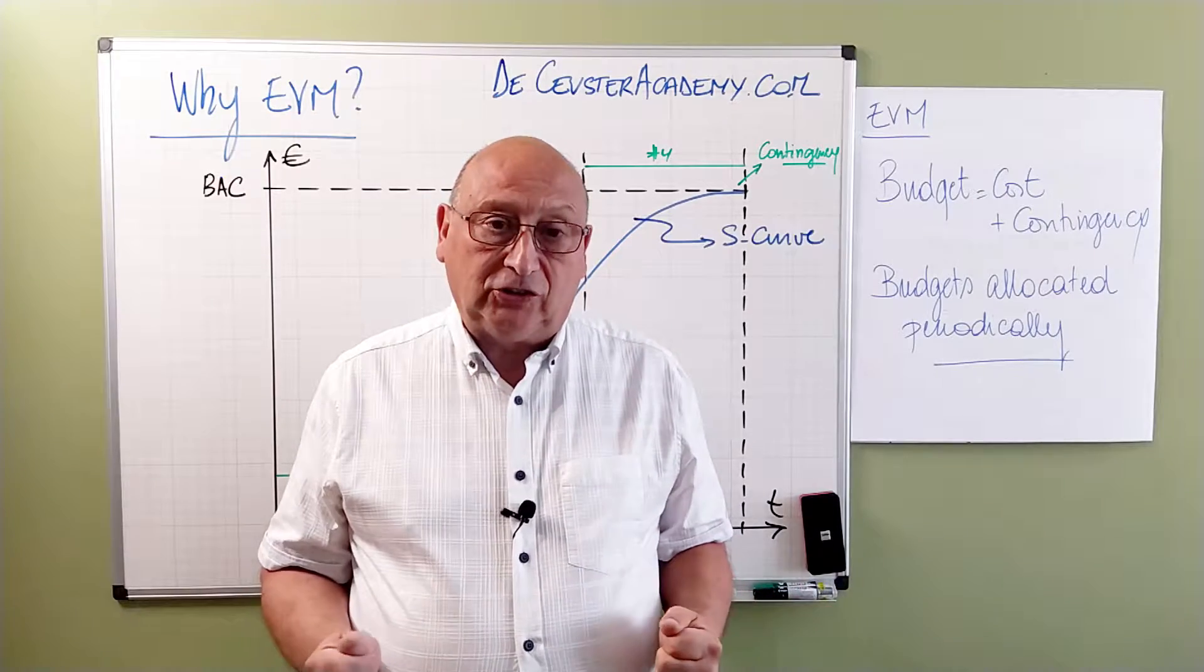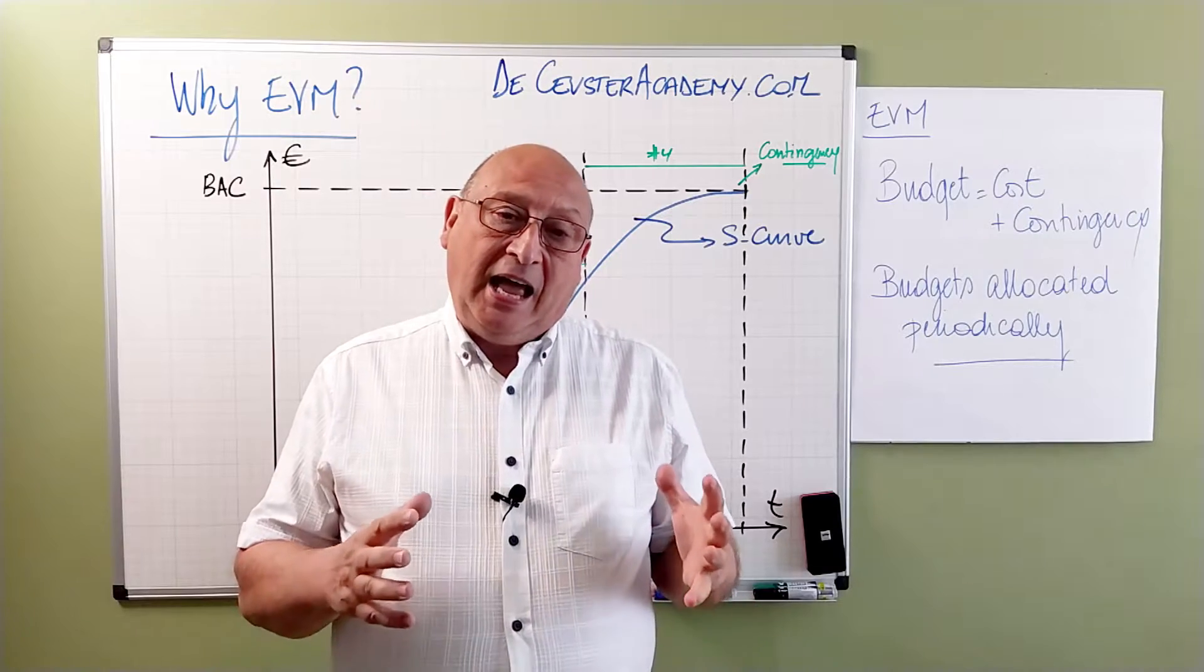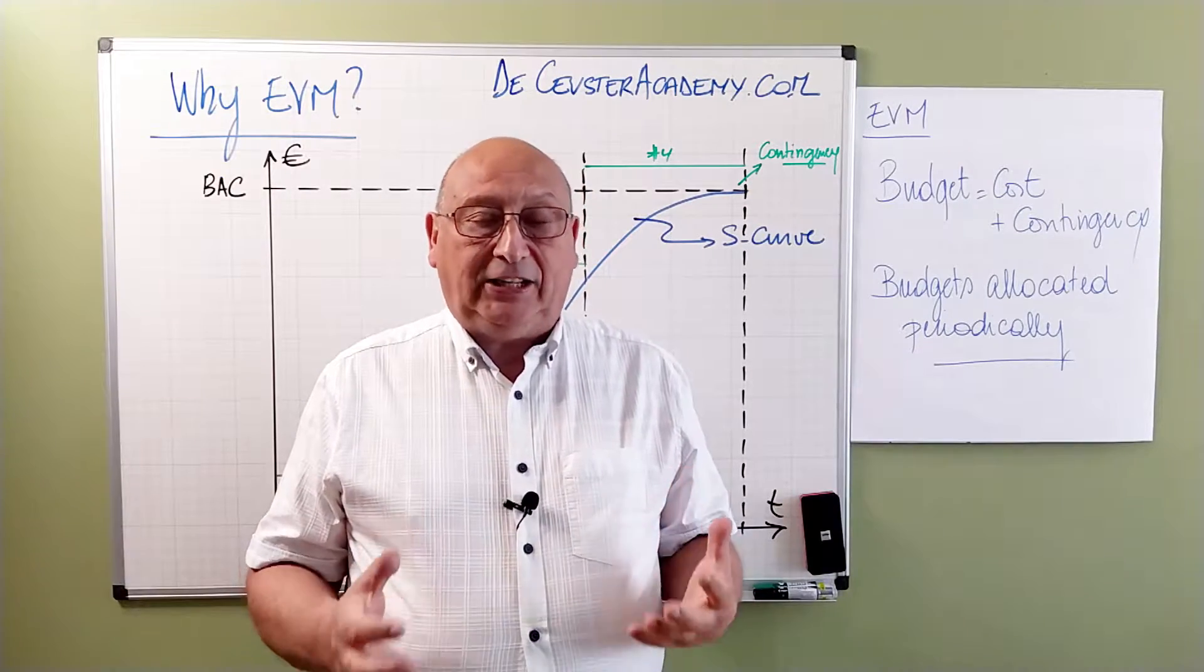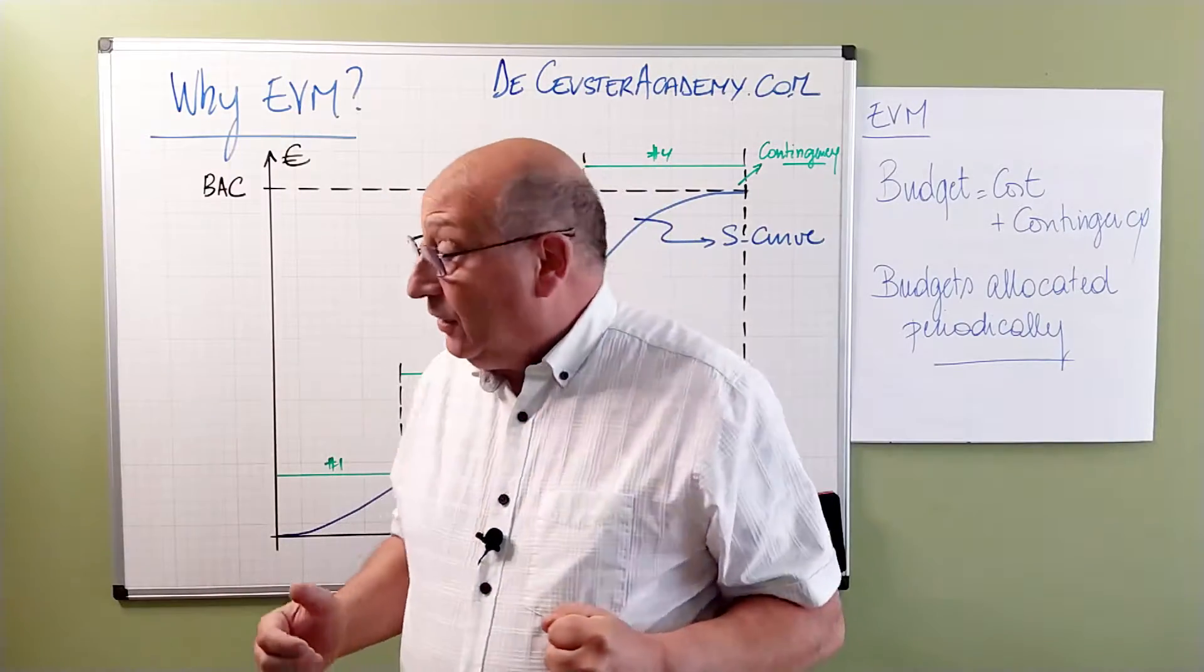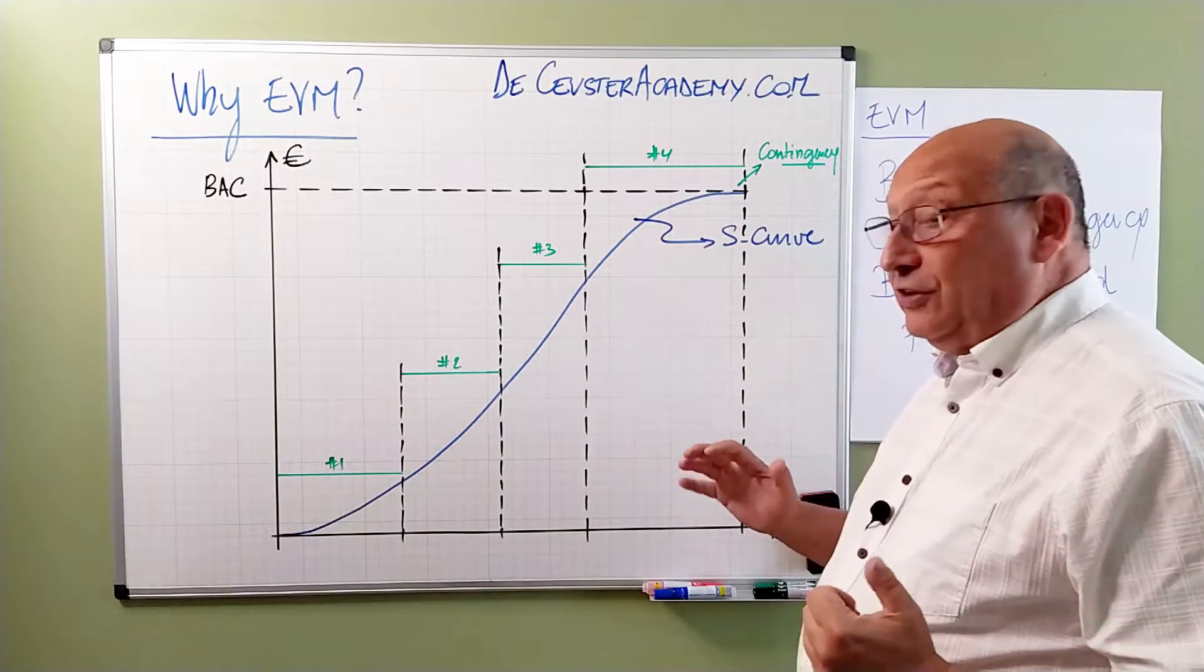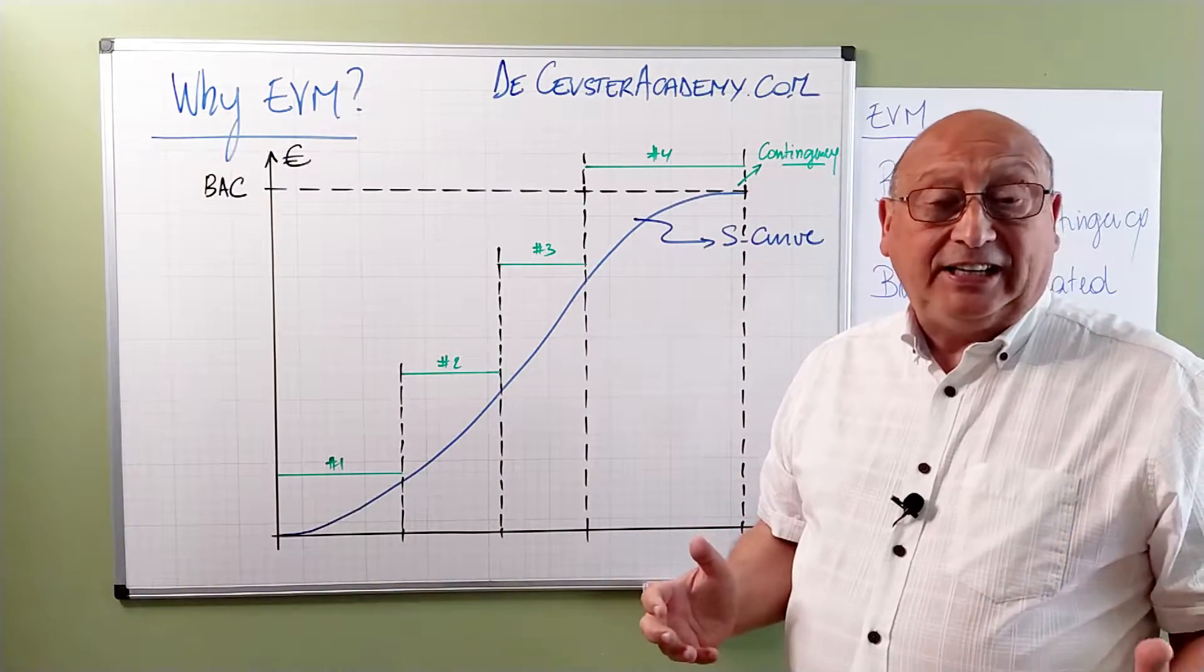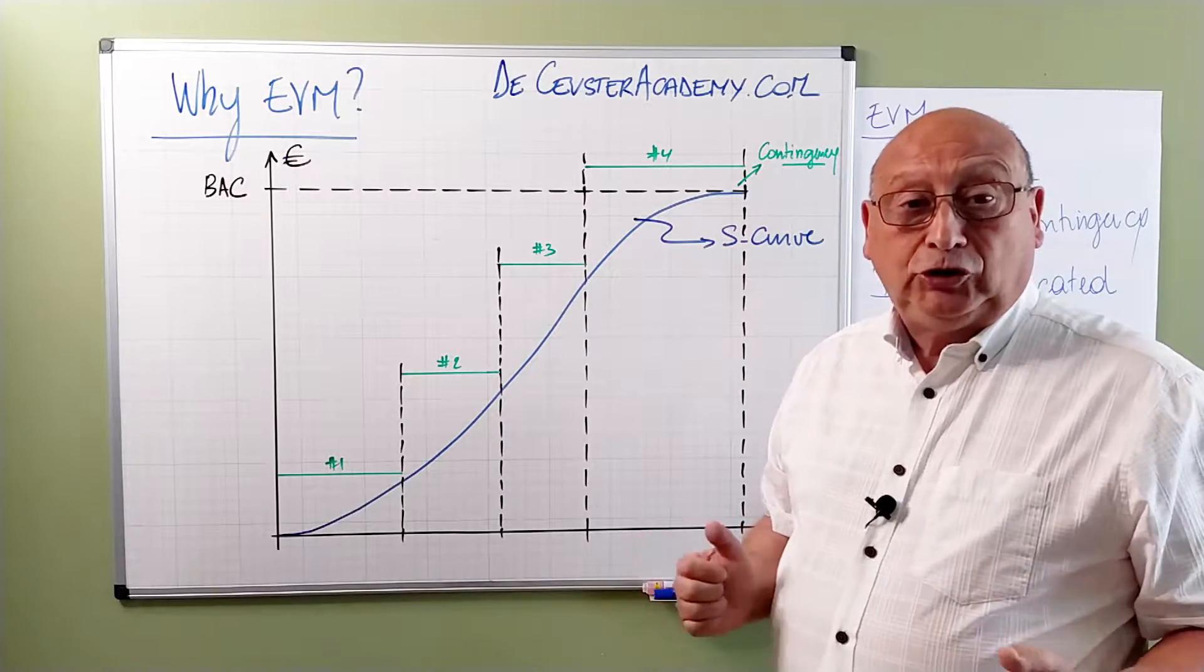In order to understand what happens once we have the project budgets, let's have a look at the S-curve or the cost curve of the project. Here on the graph you see the S-curve - the blue curve - which is basically an overview of the cost over the duration of the project.